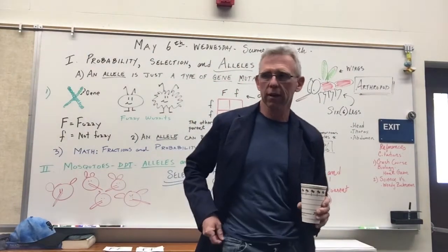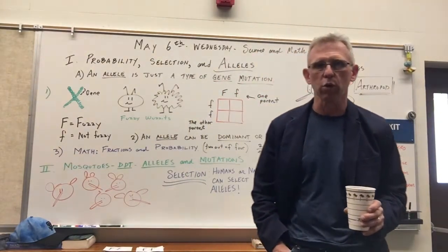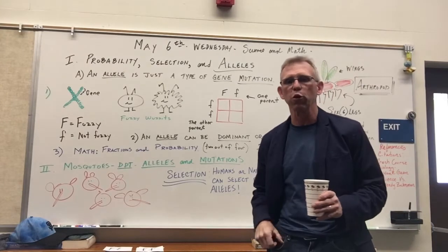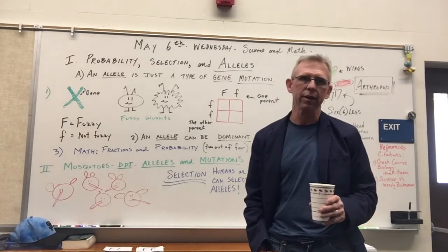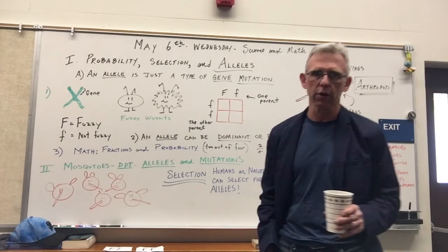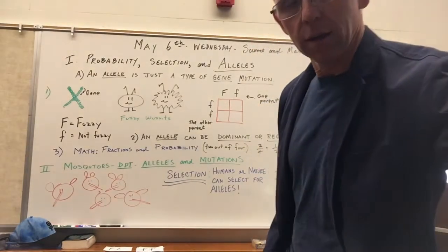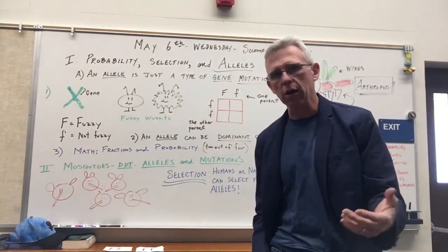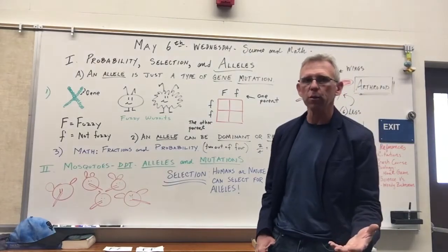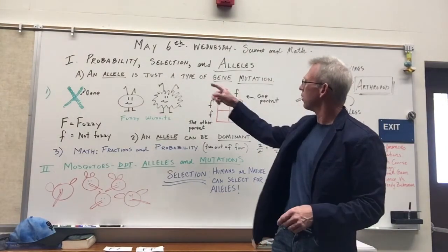Turns out that the mosquito is responsible for more human deaths than any other animal, we think. And it looks like in 2017, according to the World Health Organization, it was responsible for about a half a million deaths. Why? Because it carries malaria. It carries actually a one-celled organism that causes malaria. And we're going to talk a little bit about that, how it has to do with probability, selection, and alleles.